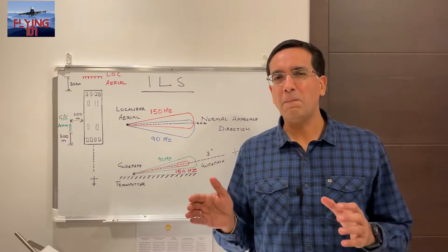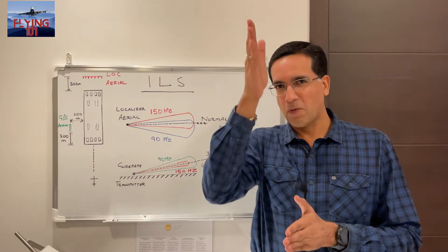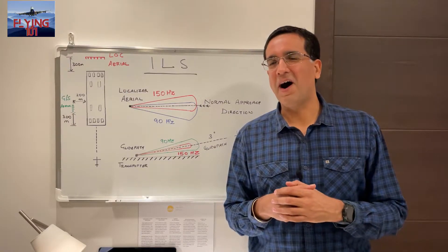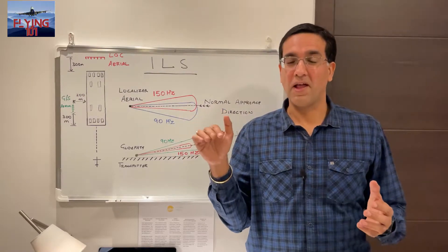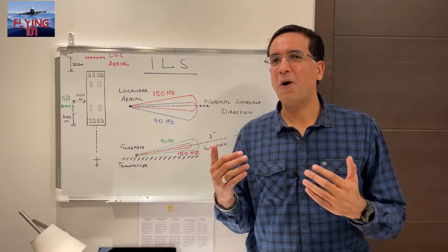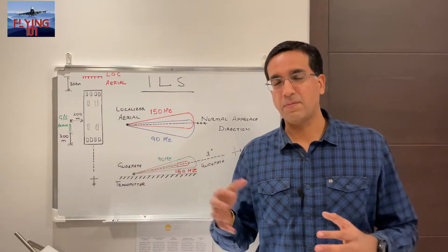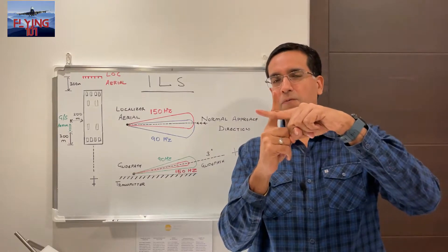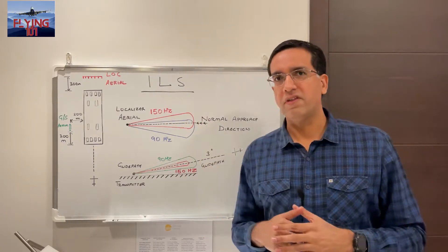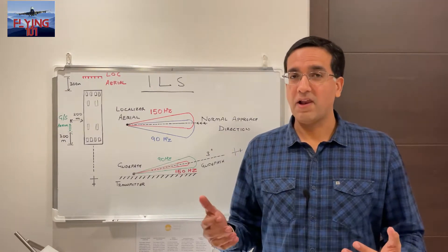An ILS approach uses ground-based navigation equipment to provide guidance to an aircraft in both the vertical and the horizontal plane. By contrast, a non-precision approach provides guidance only in the horizontal or lateral plane. An ILS is a precision approach because it provides full guidance both vertically and horizontally, and it also facilitates automatic landings where planes are able to land on their own using onboard equipment combined with the ILS ground-based system.